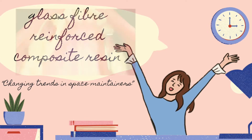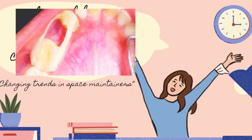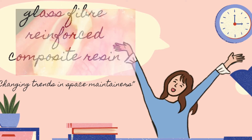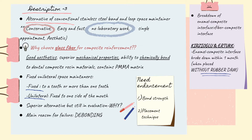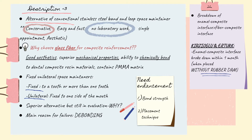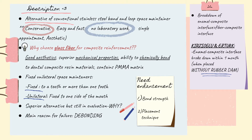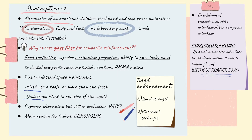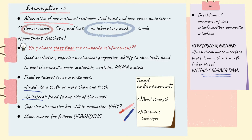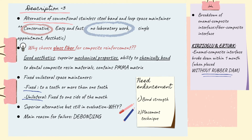We from group 3 will present to you glass fiber reinforced composite resin. There has been increased interest in glass fiber reinforced composite resin in dentistry. It has been used in removable prosthodontics, fixed partial dentures, and in orthodontic treatment as a retention splint. Now it is considered a superior alternative to conventional stainless steel band and loop space maintainers, especially due to its reduced tooth preparation, which is essential for prevention — one of pediatric dentistry's major aims.